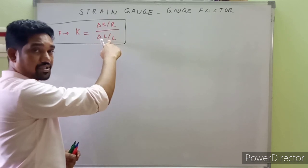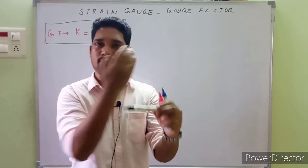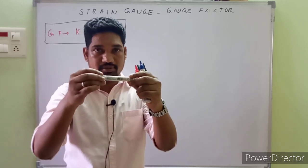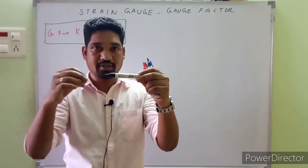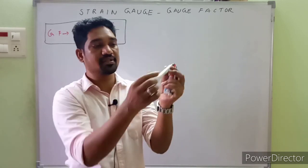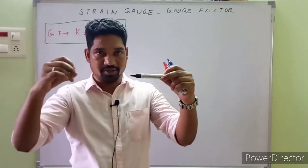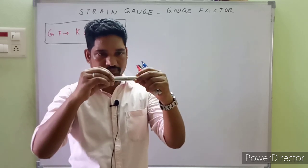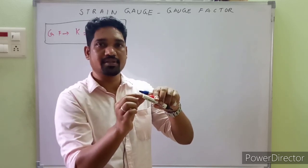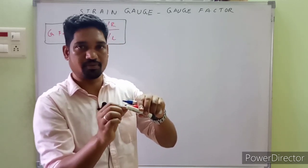To understand this, consider a metal wire. When the metal wire is pulled in one direction, there will be a change in its length, and correspondingly a change in the cross-sectional area. Specifically, an increase in length decreases the cross-sectional area, meaning there will be a decrease in the diameter of the metal wire.